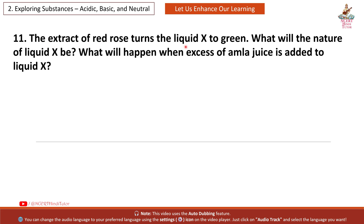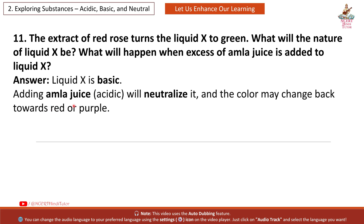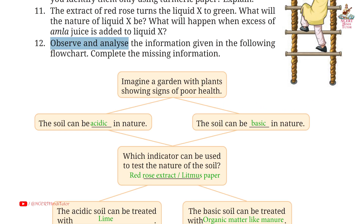Question 11: The extract of red rose turns liquid X to green. What will the nature of liquid X be? What will happen when excess of amla juice is added to liquid X? Answer: Liquid X is basic. Adding amla juice, which is acidic, will neutralize it and the colour may change back towards red or purple.